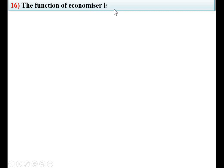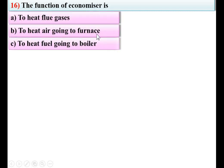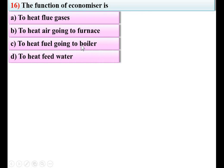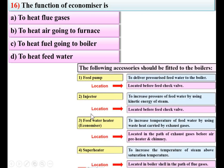The function of the economizer is — options: to heat flue gases, to heat air going to the furnace, to heat fuel going to the boiler, to heat feed water. From the accessories list, the function of the economizer is to increase the temperature of feed water. So D is the right answer.